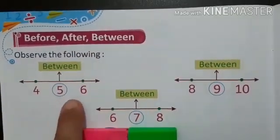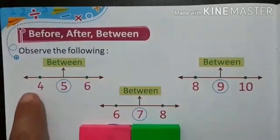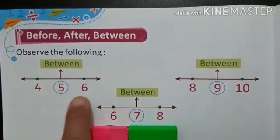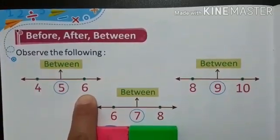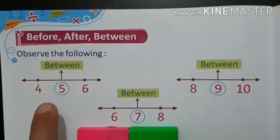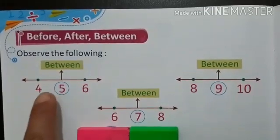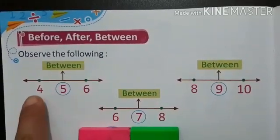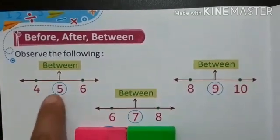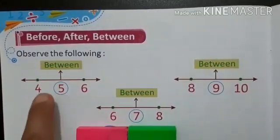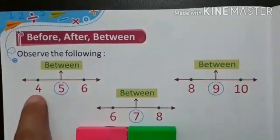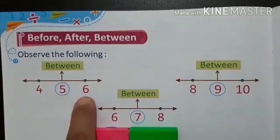See the first example. What is in between 4 and 6? That is 5. To find out this 5, you have to see the after number. After 4, what comes after 4? That is 5. So both will go parallel. After writing this middle number, you have to read once: 4, 5, 6.